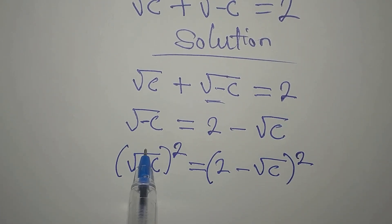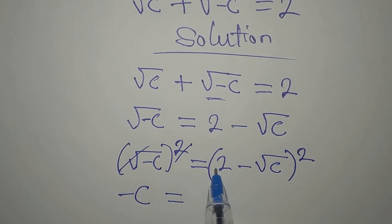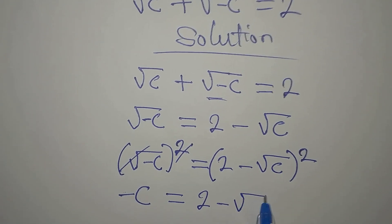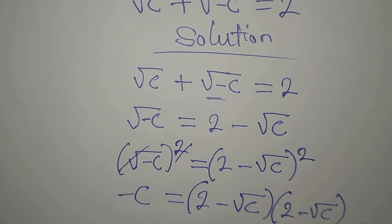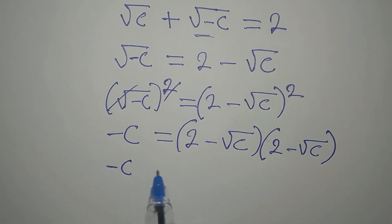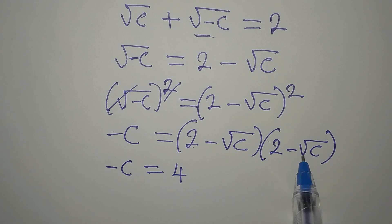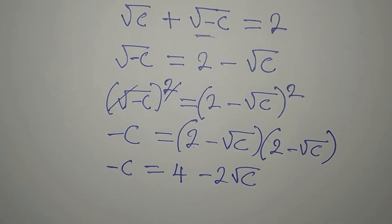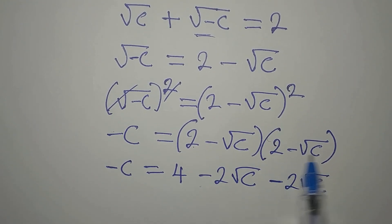This right here we can take out. We have negative c and that will be equal to the expansion of this — that will be 2 minus root c multiplied by 2 minus root c. So we have minus c which is equal to: 2 times 2 is 4, 2 times minus root c is minus 2 root c, minus root c times 2 is minus 2 root c, then this multiplied by this will give positive c.